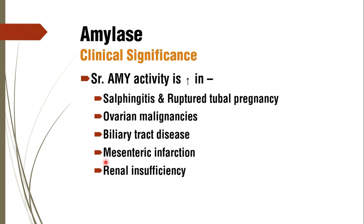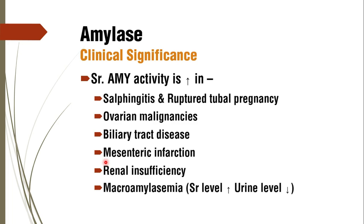There is a condition called macro amylasemia, where the molecular weight of the amylase molecule is greater than the usual 54,000 to 62,000. If molecular size is larger, it prevents excretion through the kidney, so it will not appear in urine. As a result, serum amylase levels increase while urine amylase levels decrease — that is macro amylasemia.